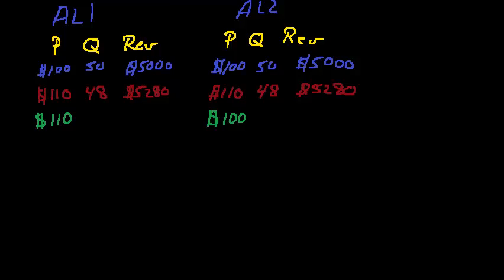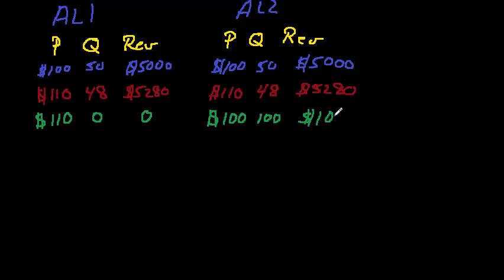So in this case, when we have $110 for airline one seats, their demand is going to go to zero and their revenue will go to zero. All of that demand will shift to airline two. At $100, the quantity demanded was 50, so now all of the demand goes to airline two and they're going to see a quantity demanded of 100, and their total revenue is going to increase to $10,000. Airline one is not going to be satisfied with that — they're going to hope that airline two moves up to the point where they both have more revenue.